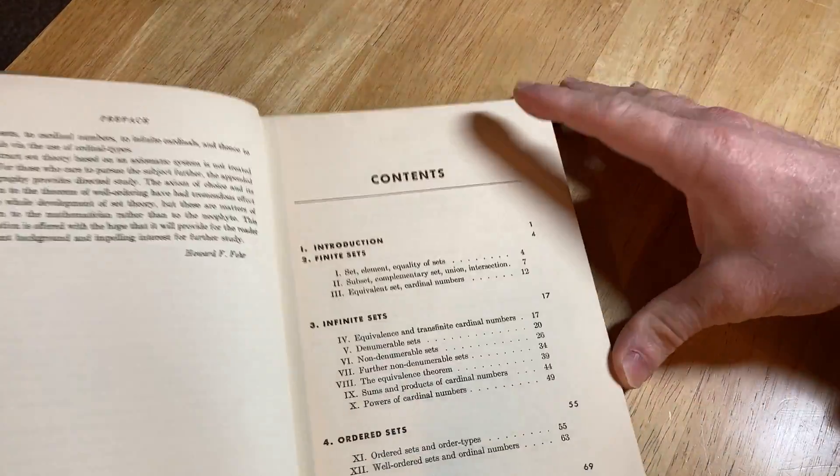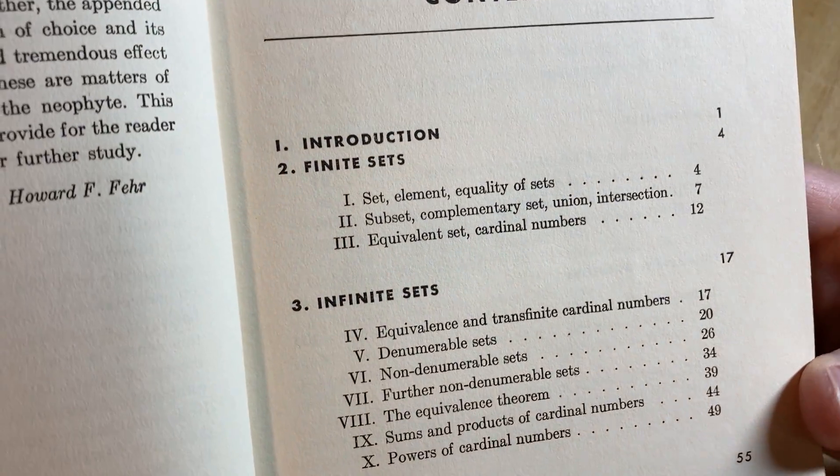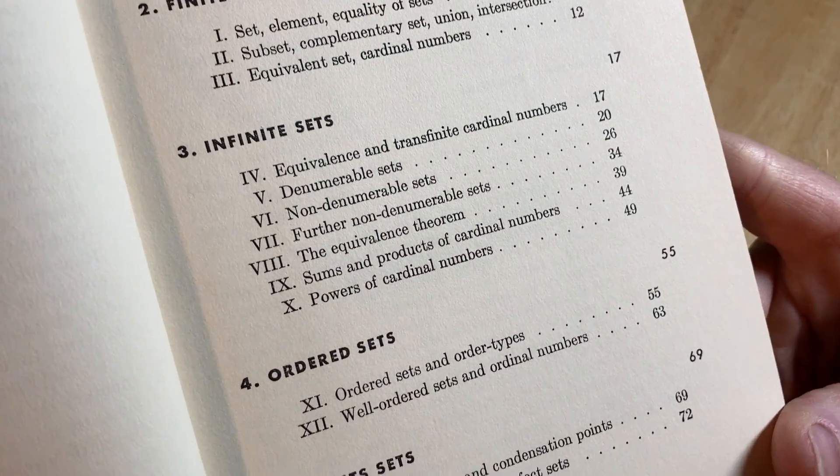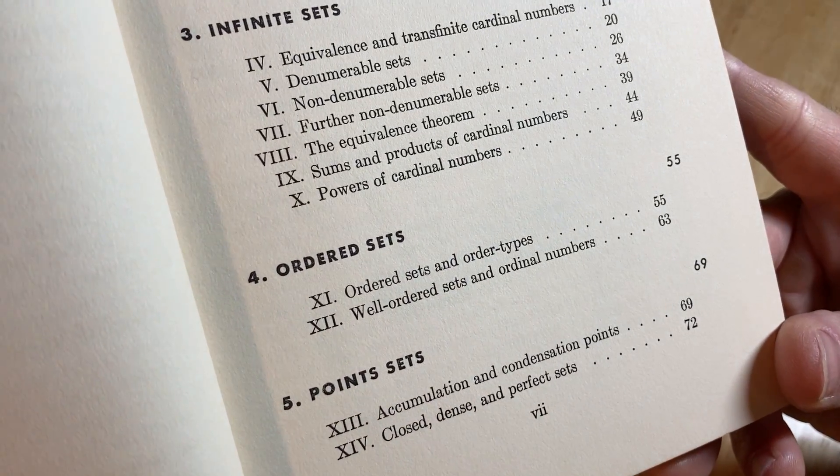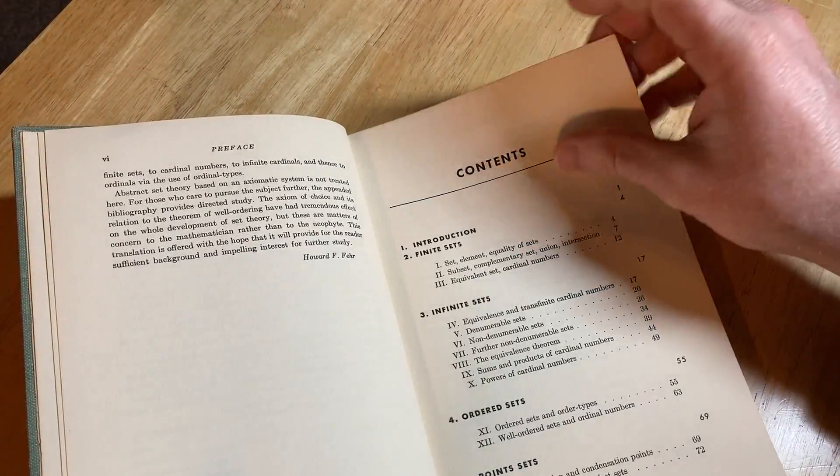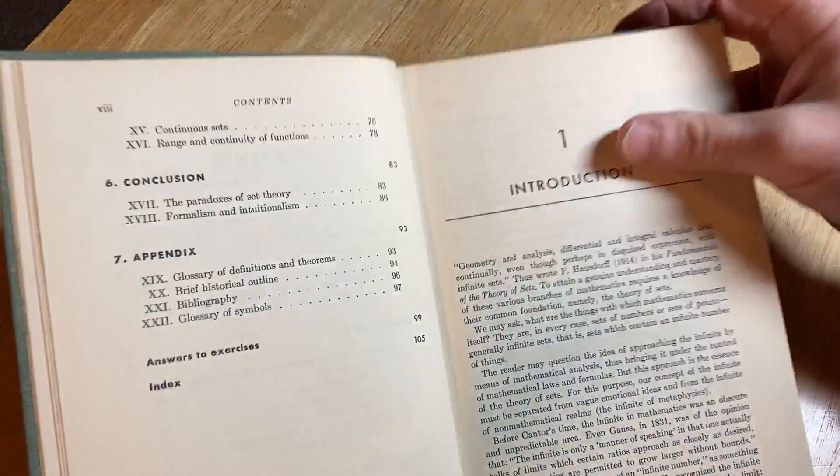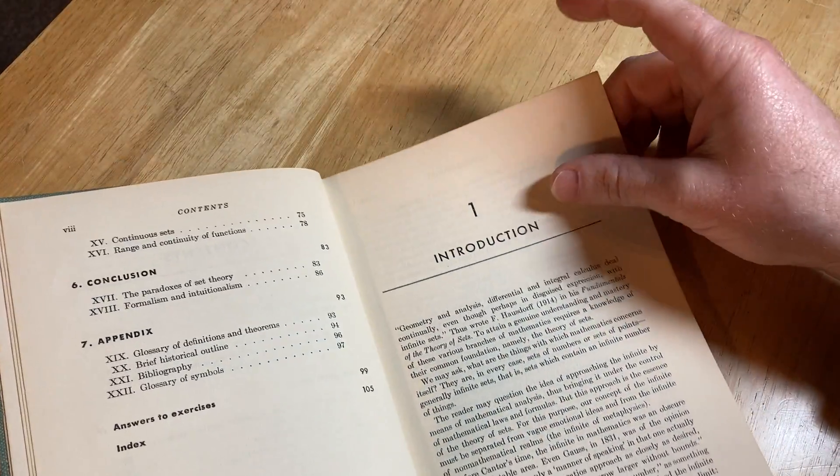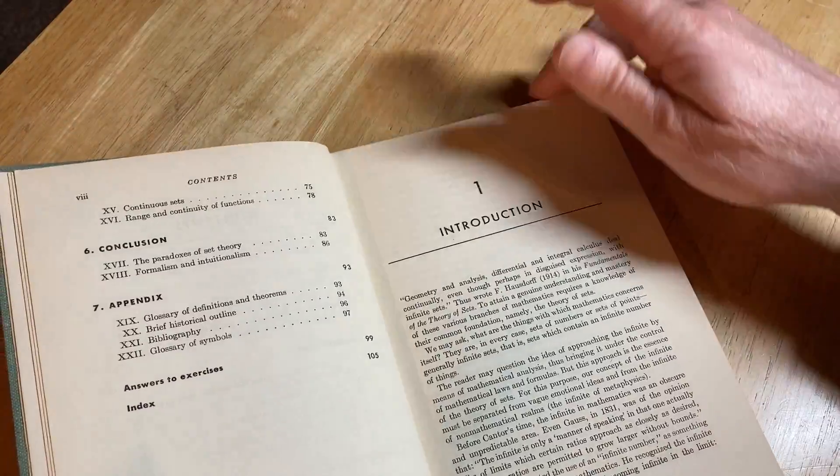And here's the contents of this book. Finite sets, infinite sets, ordered sets, point sets. Conclusion appendix. That's it. And answers to exercises.